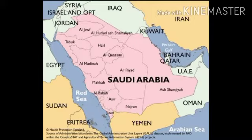No rivers or lakes are found in this desert. This causes the acute scarcity of fresh water. Rub al-Khali in the south and An-Nafad in the north are the two important deserts here. Saudi Arabia is a monarchy where the country is ruled by the king.